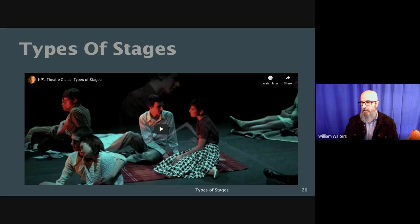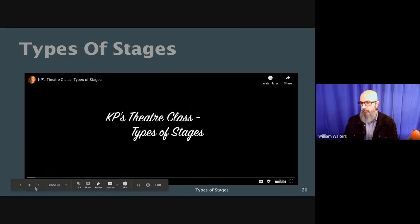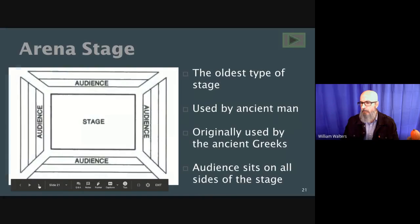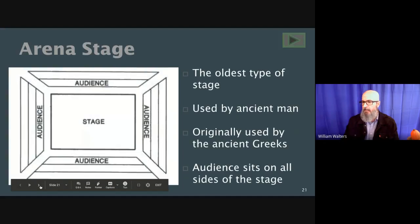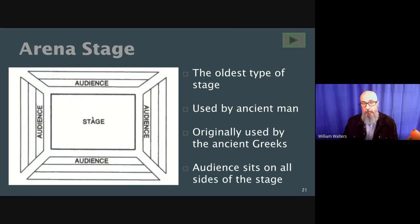Let's get started with Part 3: the different types of stages. The first type of stage is an arena stage. As you can see from the photo, the stage is in the middle and the audience sits on four sides. This is actually used in theater where the performers play in the center.